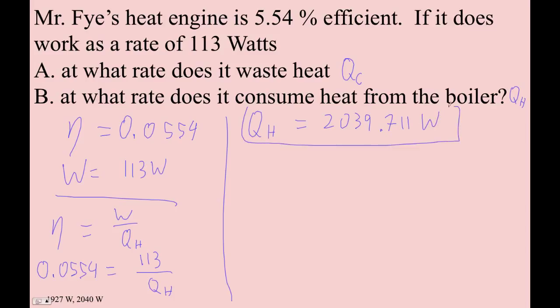So I answered the second question first because it was easier for me to do that. And now I'm going to say that QH is QC plus work. So 2039.711 is QC, which we don't know, plus 113.